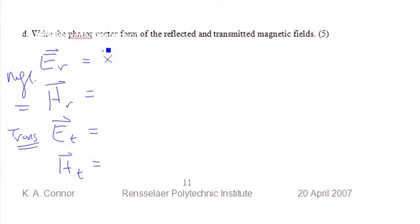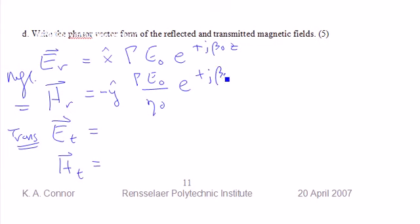Are written in most generic form as the reflection coefficient times E₀ e^(jβ₀z). This is reflection coefficient E₀ over η₀, and there should be a minus sign in front of that, e^(jβ₀z).